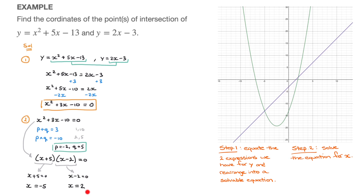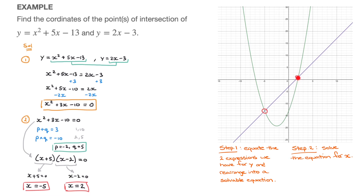These two values of x are the solutions to the quadratic equation — the x-coordinates of the points of intersection. Looking at the graph plotted earlier, we can see the x-coordinate of the first point of intersection is negative 5, and the x-coordinate of the second point is 2.